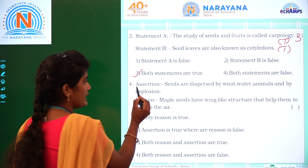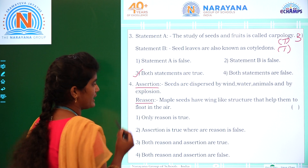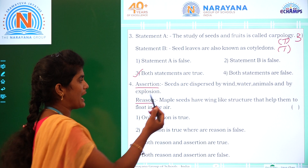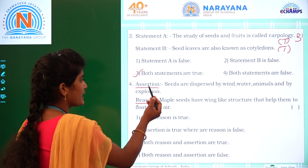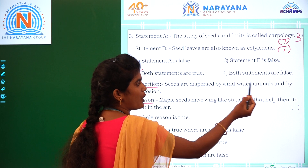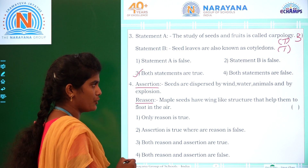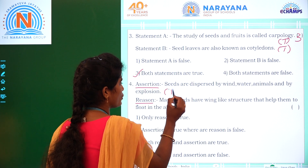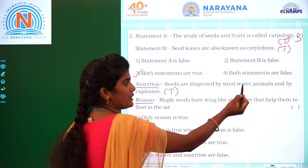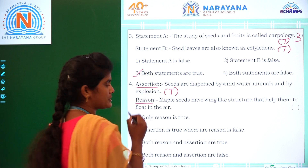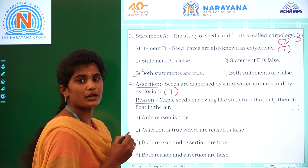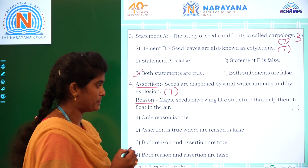Coming to the fourth question: assertion and reason — two statements. Assertion: seeds are dispersed by wind, water, animals, and by explosion. Wind, water, animals, and explosion — these four are called agents of dispersal.